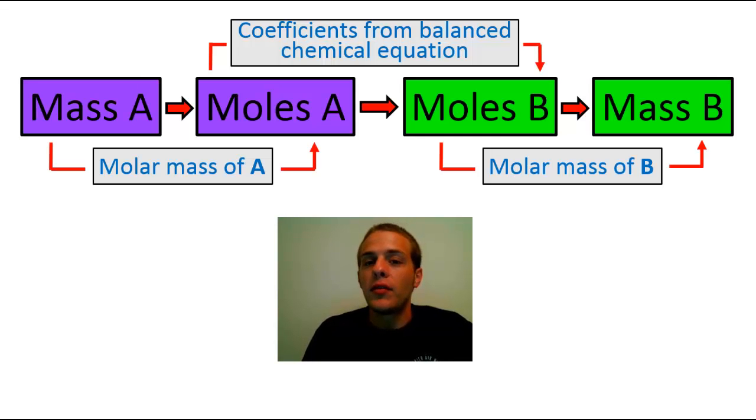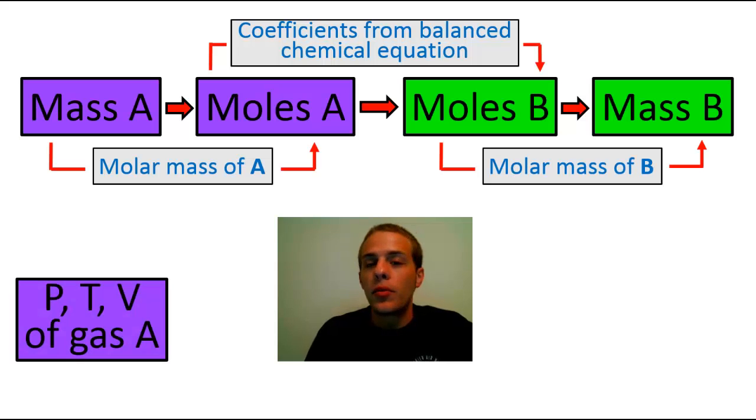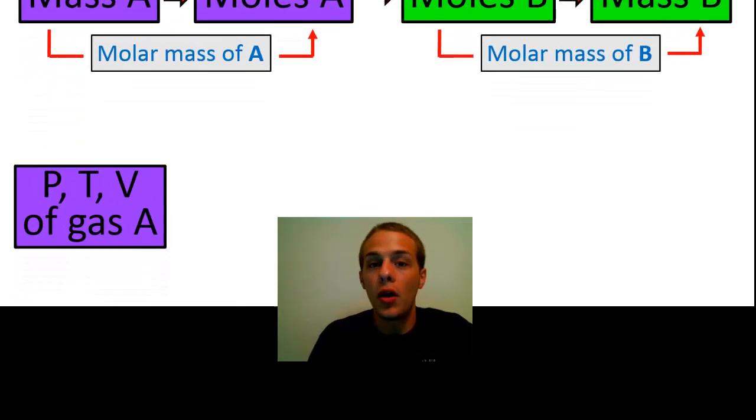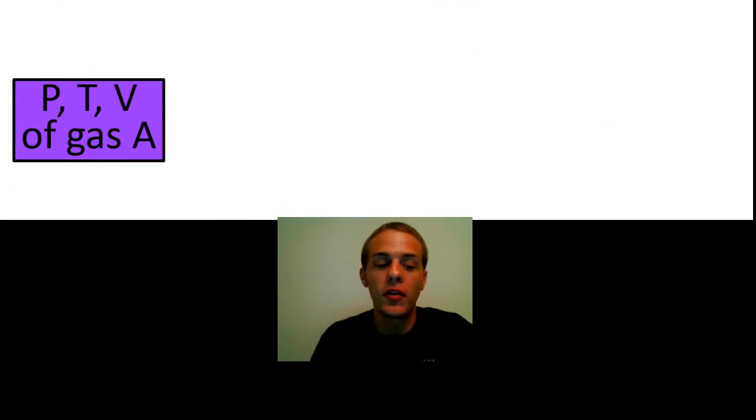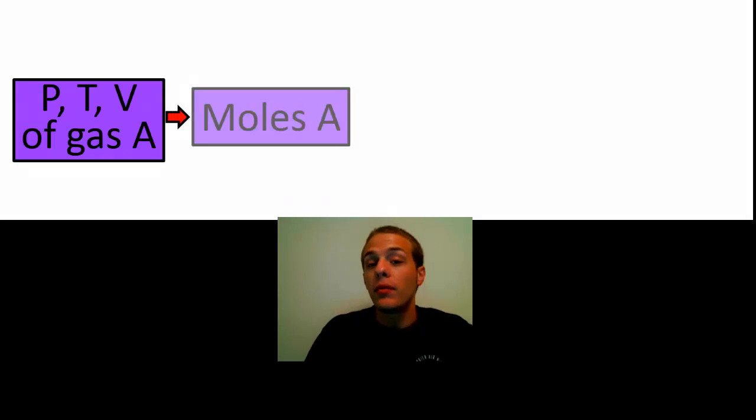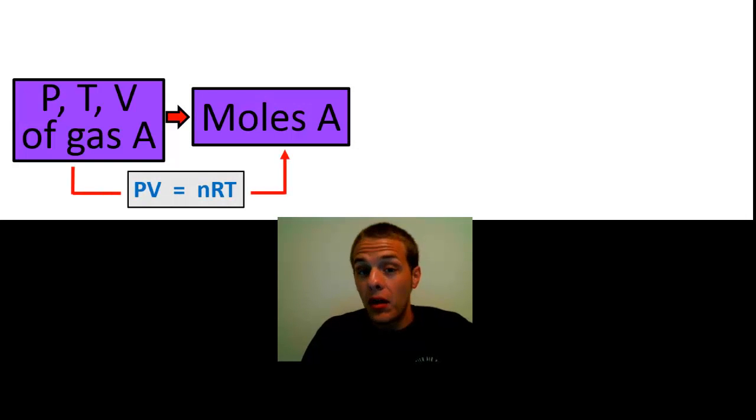There are, however, a couple of things that you can measure quite easily when you have a gas, and that is the pressure, the temperature, and the volume. You can measure the volume very easily. With the thermometer, you can measure the temperature very easily. If you have a barometer and a manometer, you can measure the pressure of that gas very easily. So if you have those three things, pressure, volume, and temperature of a gas, you can figure out the amount of that gas in moles, and it's the ideal gas law that helps you do that.